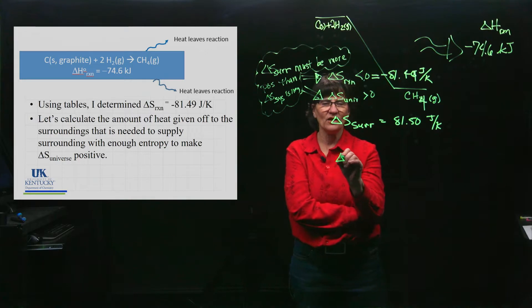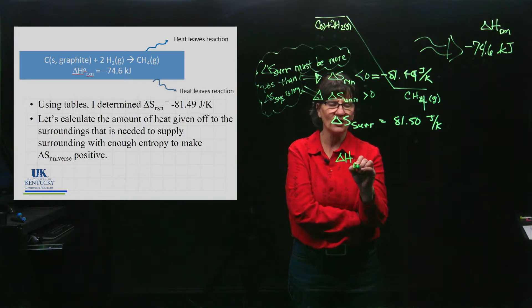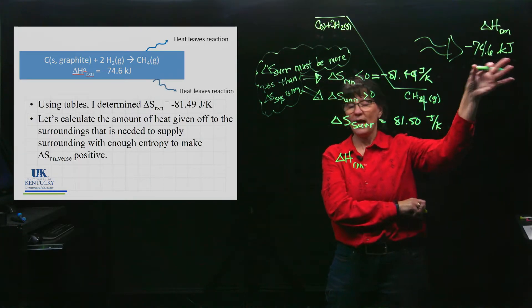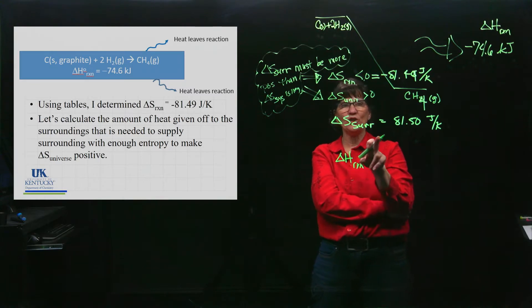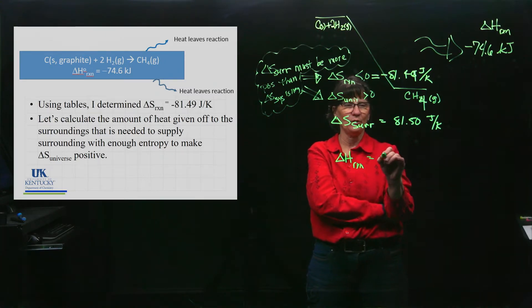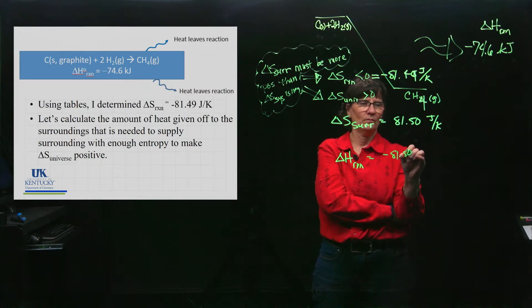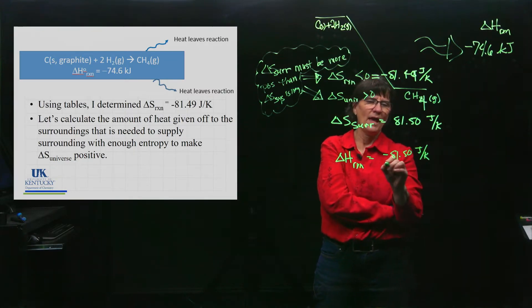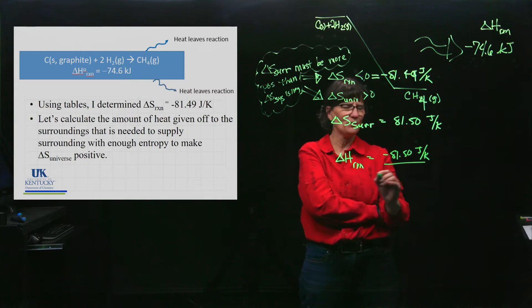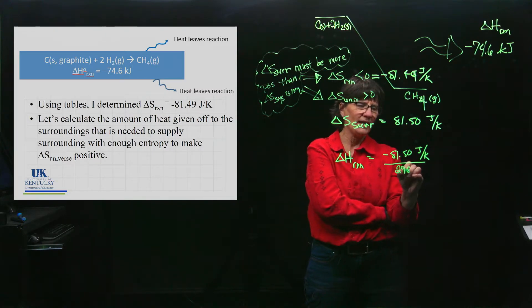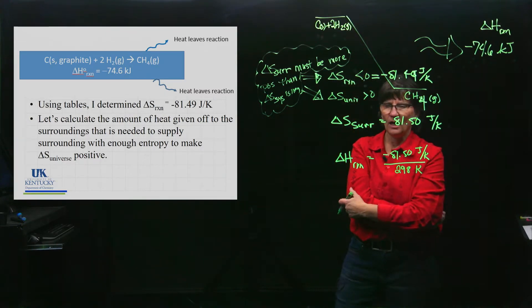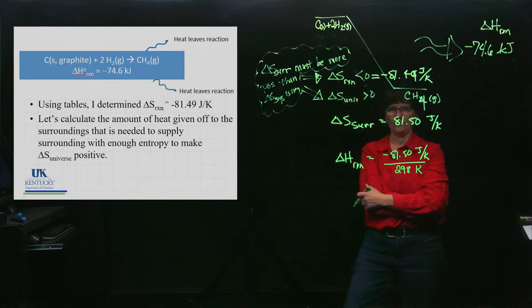What will my ΔH - how much of that ΔH of the reaction will I need to use to make my surroundings have that kind of value? I have to pick a temperature and I want to use 298 Kelvin for that value.